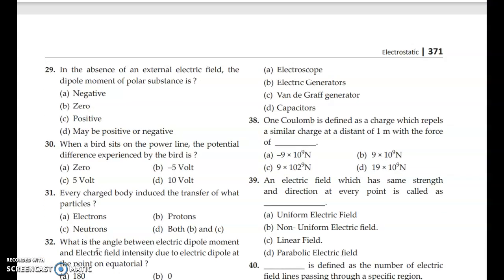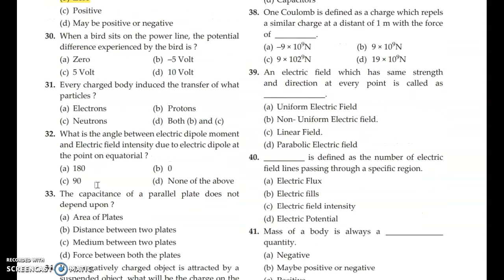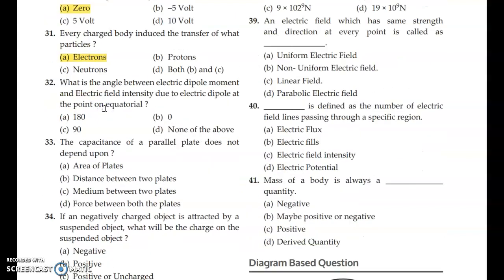In the absence of an external electric field, the dipole moment of a polar substance is zero. Question 30: When a bird sits on the power line, the potential difference experienced by the bird is zero because the circuit is incomplete and no current flows to the bird's body. Every charged body induces the transfer of particles. Answer is option A. What is the angle between electric dipole moment and electric field intensity due to electric dipole at the point on equatorial? Answer is option C, 90 degrees.